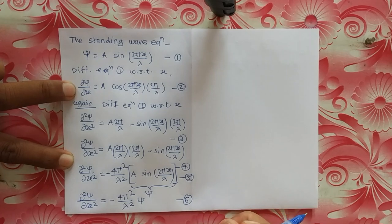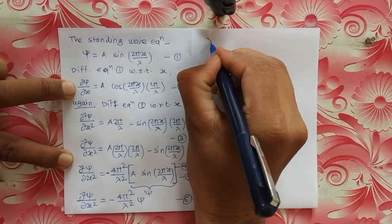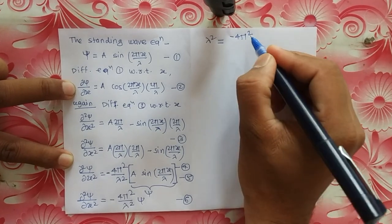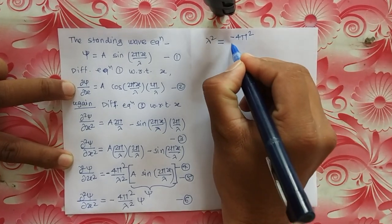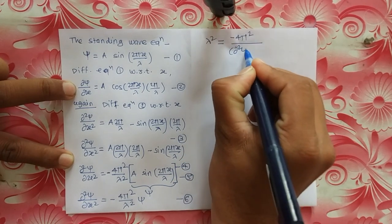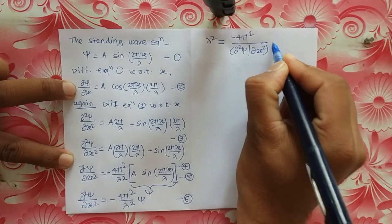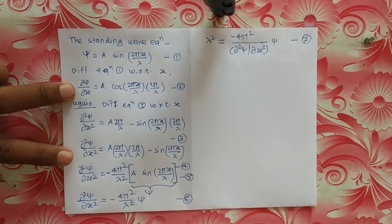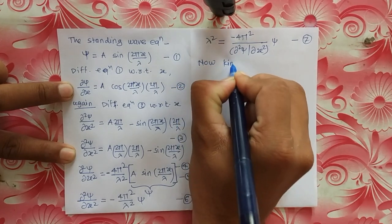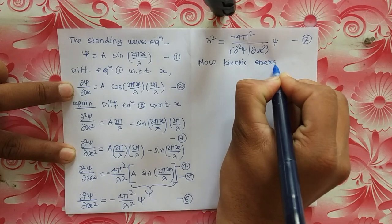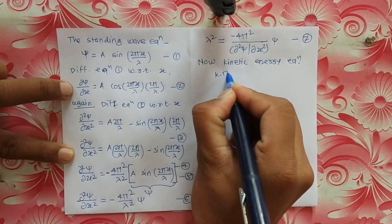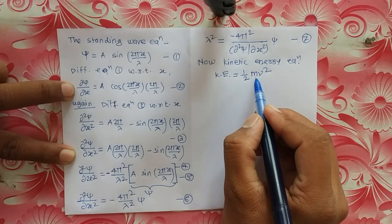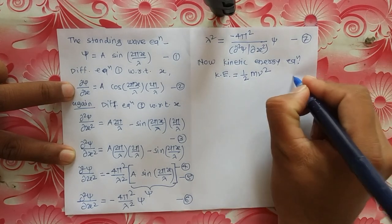Rearranging equation 6 for lambda squared, we get lambda² equals minus 4π² divided by (d²psi/dx²) times (1/psi). This is equation number 7. Now we use the kinetic energy equation: kinetic energy equals (1/2)mv², where m is the mass of the electron and v is its velocity. This is equation number 8.